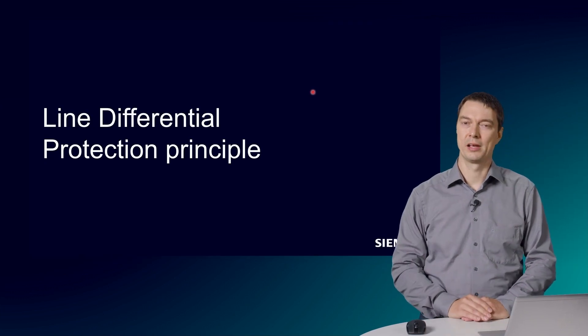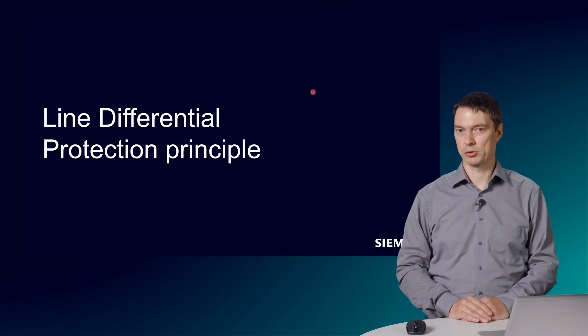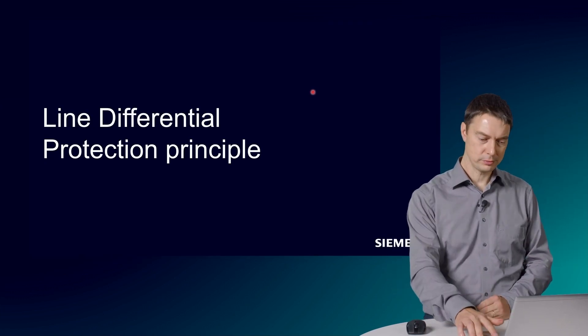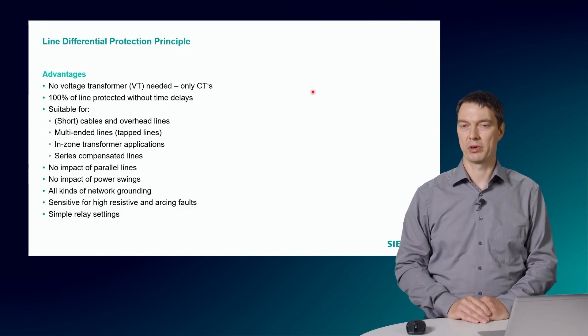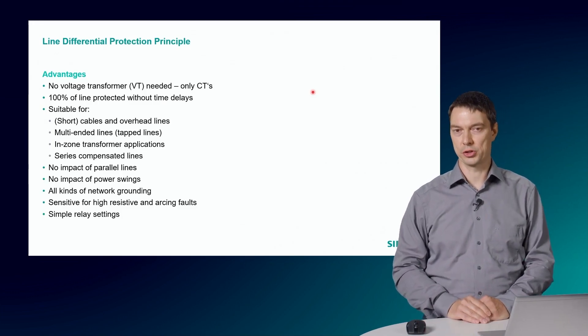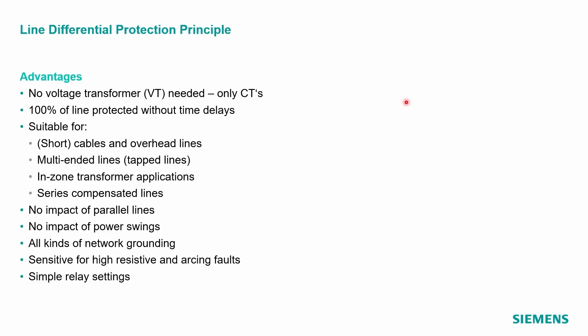Let's come to the Line Differential Protection Principle. The Line Differential Protection Principle provides the following advantages. It only requires CTs. There is no need for a voltage transformer. It's a unit protection. So 100% of the line is protected without an additional need for a time delay.